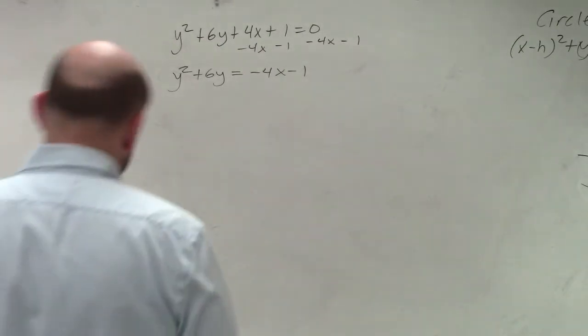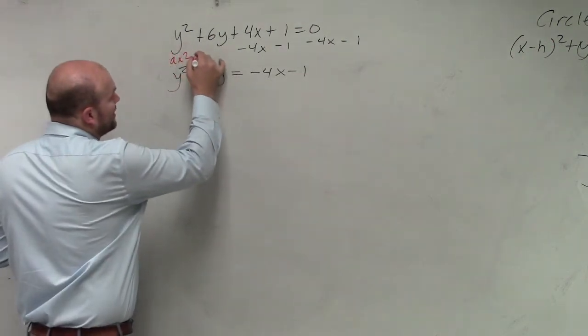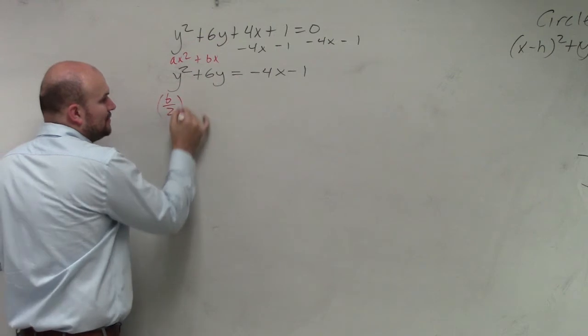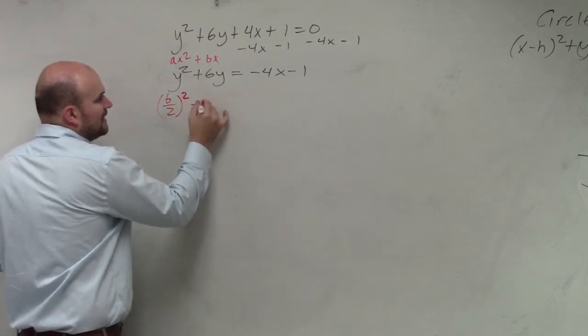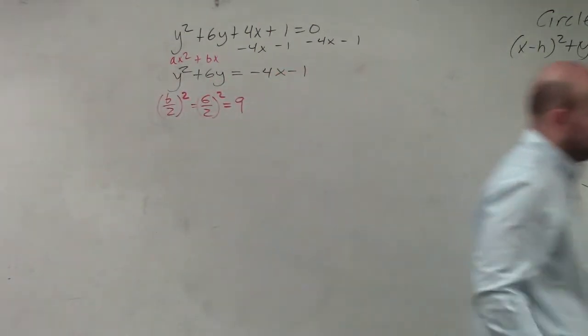So if you guys remember to do that, this was kind of like your ax squared plus bx. You take b, divide it by 2, and square it. So that equals 6 divided by 2 squared, which equals 9.